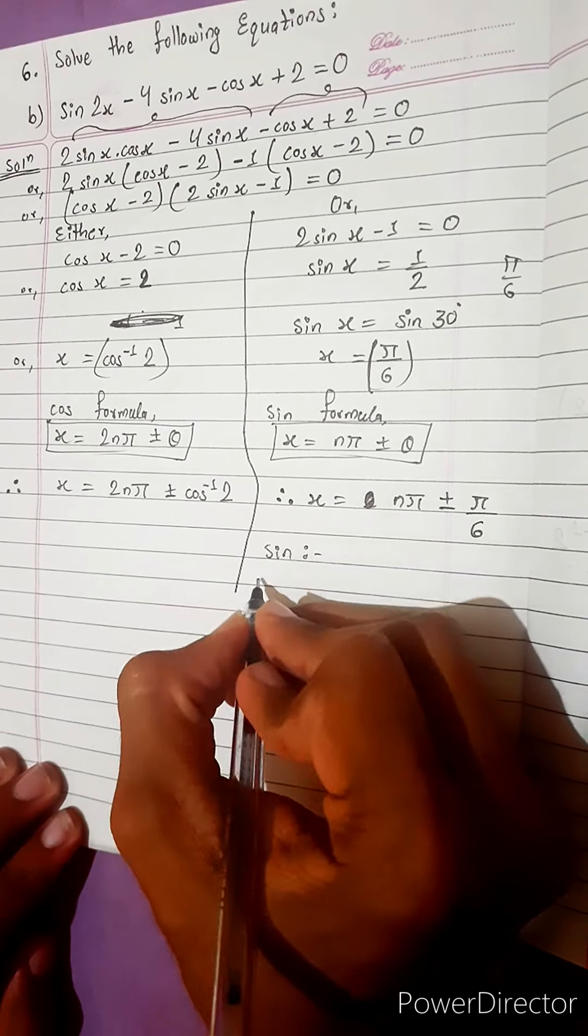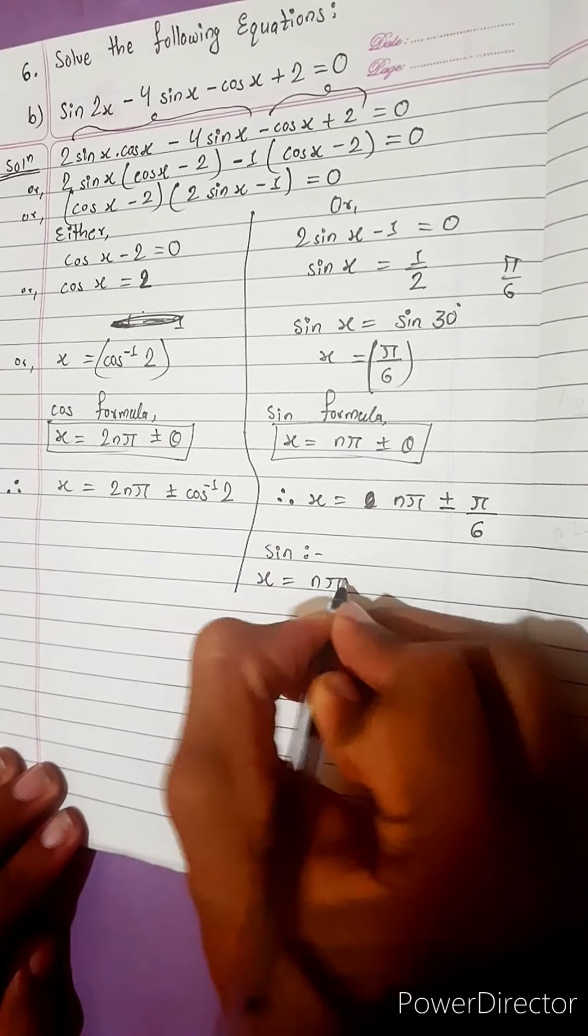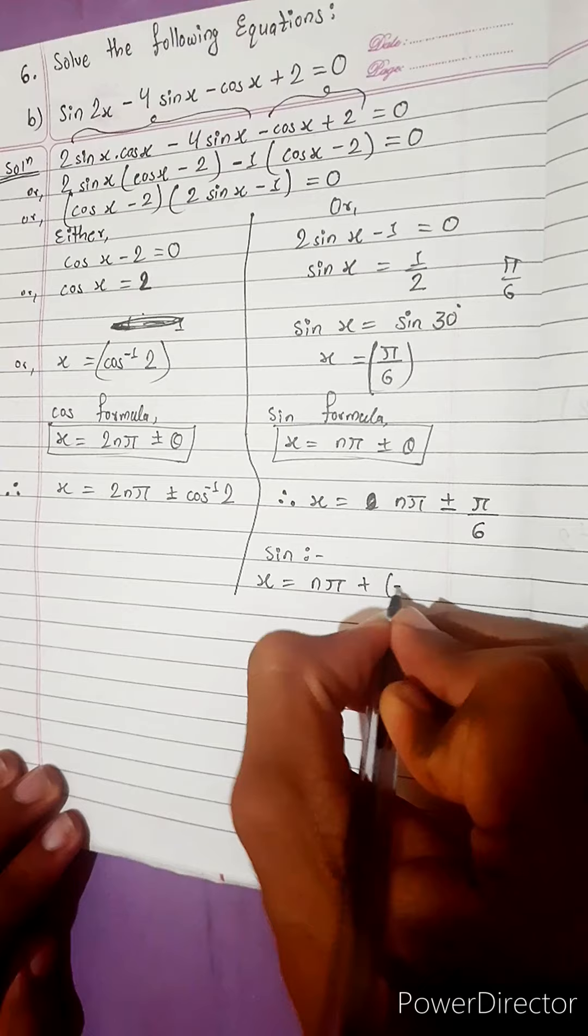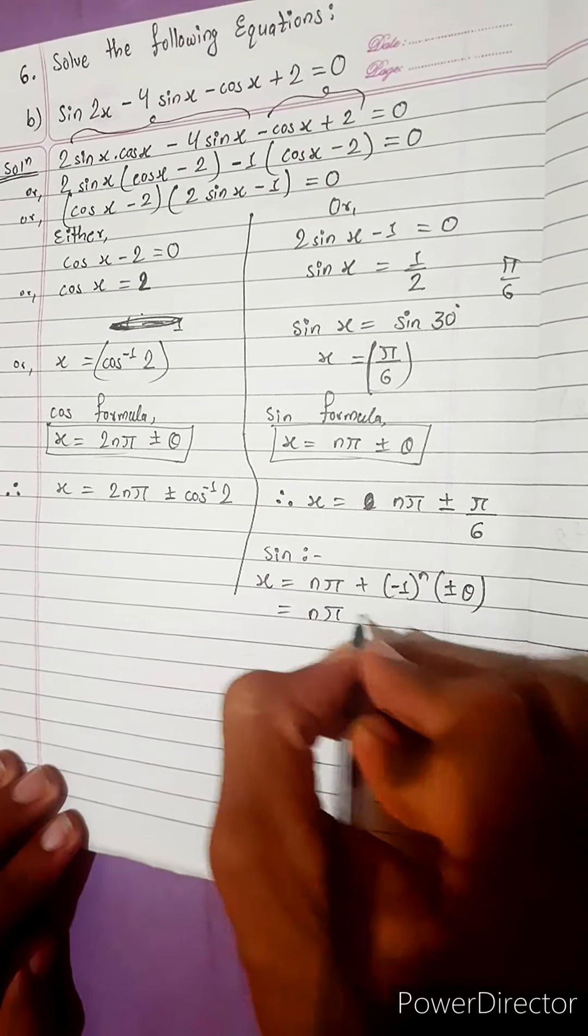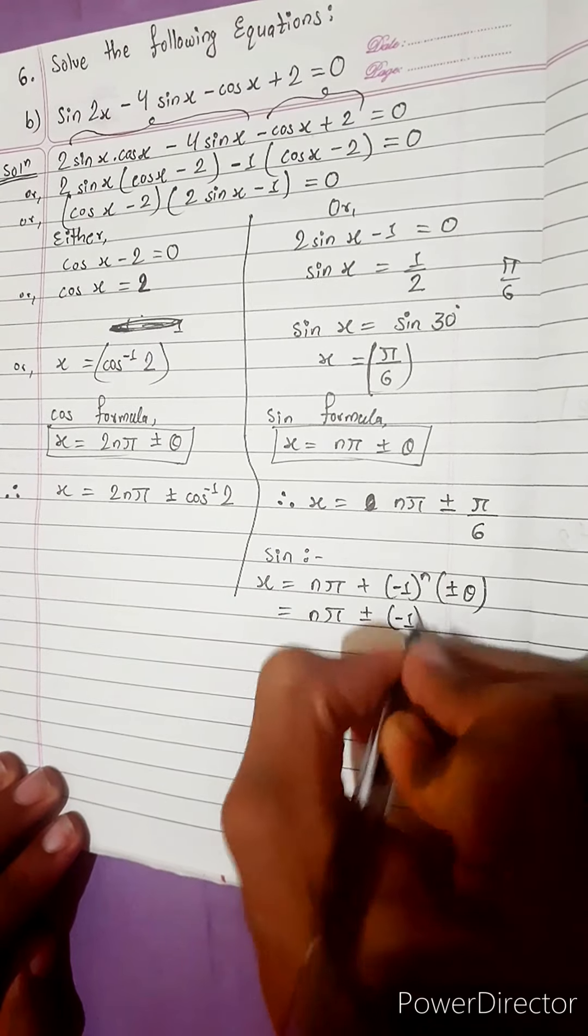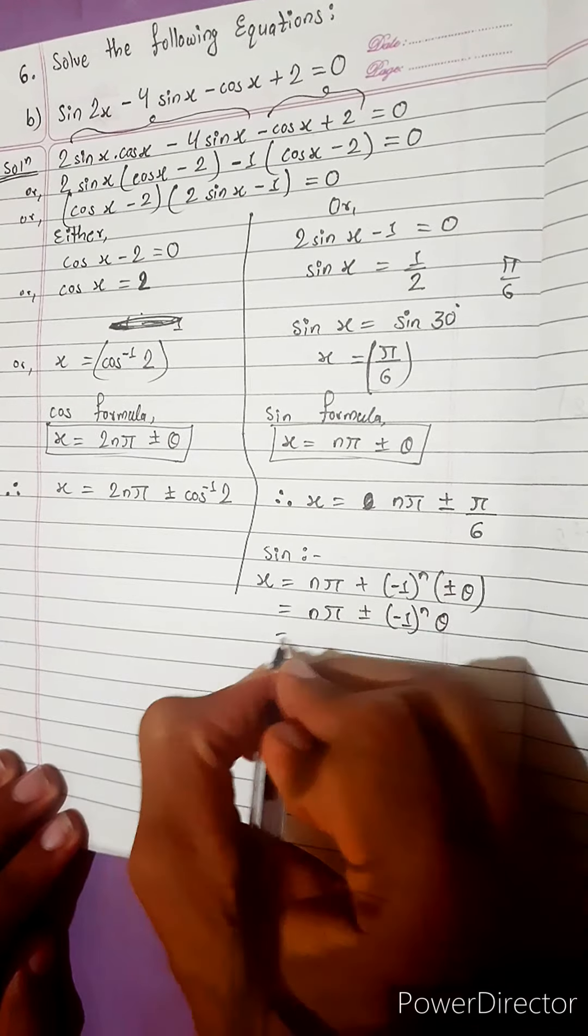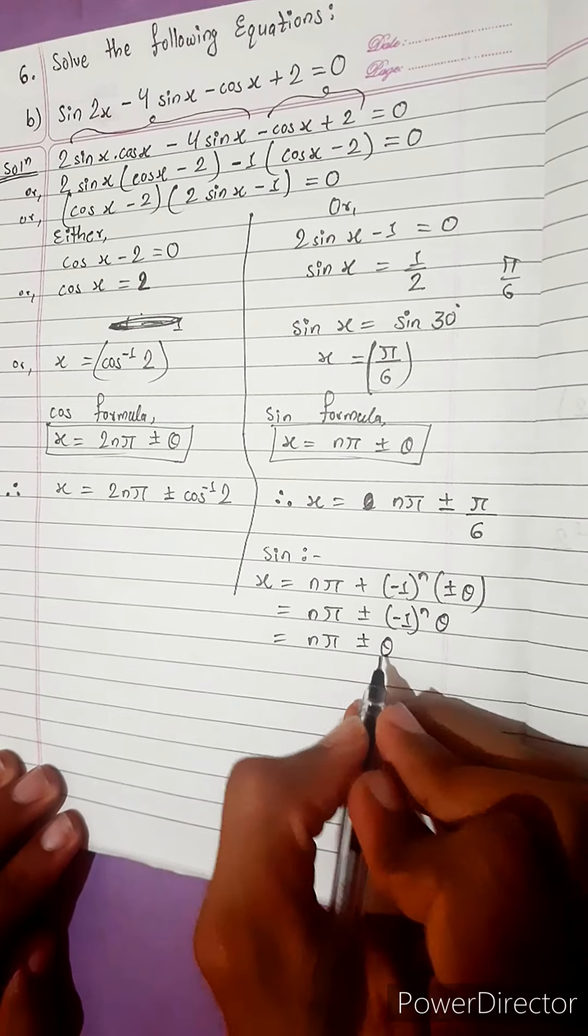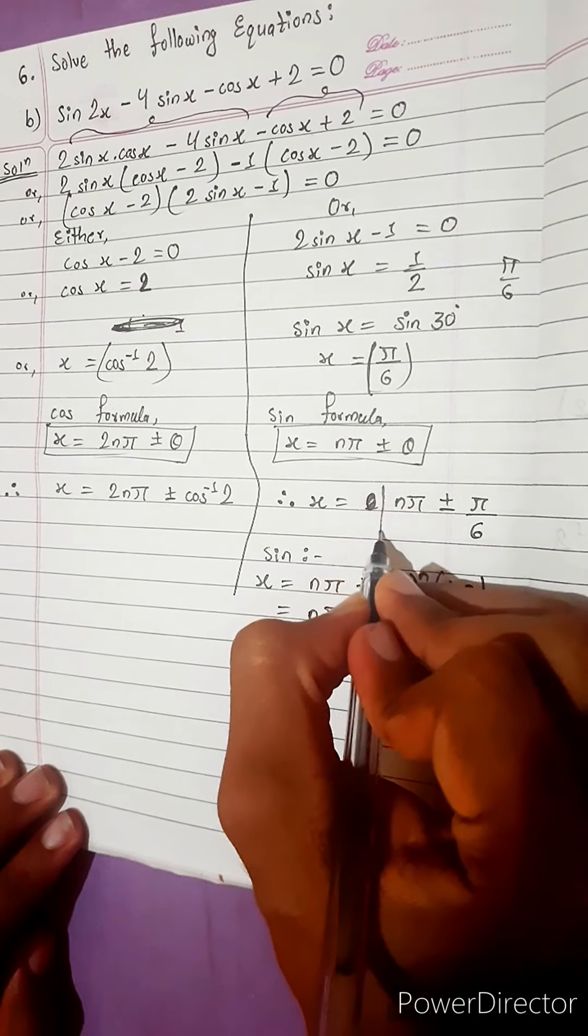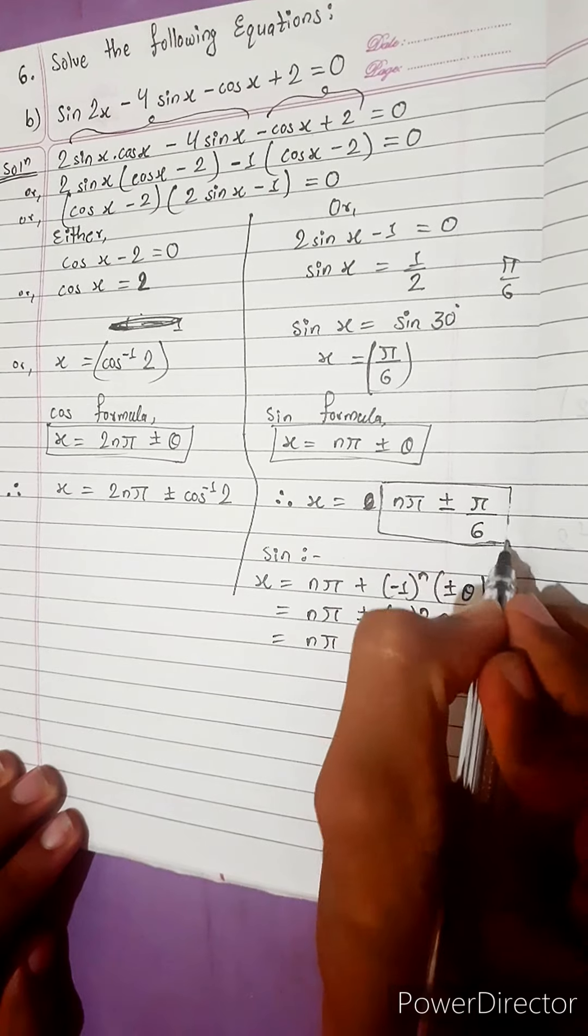Now, let me check. While checking I found that formula for sin is, there are many formulas. Out of them, popular formulas are n pi plus minus 1 power n multiply with plus minus theta. This is one formula. Second formula is n pi plus minus minus 1 power n into theta. Third formula is n pi plus minus theta.